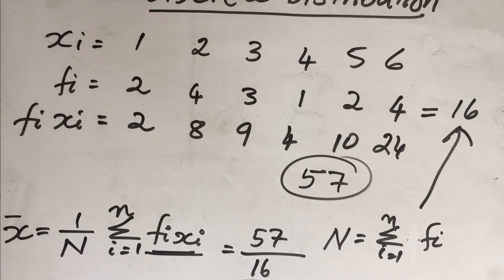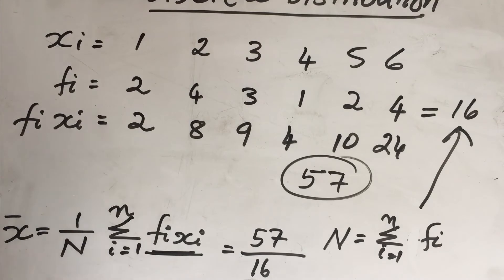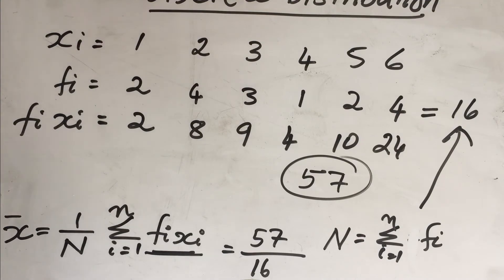This means that on average, a student has got about 3.05 chocolates. This is how we calculate the mean for a discrete distribution.